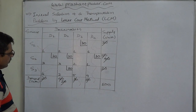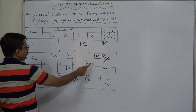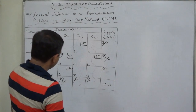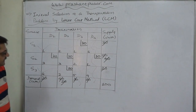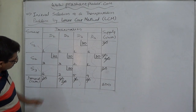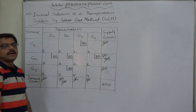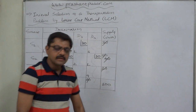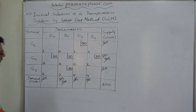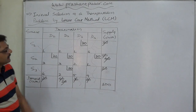Let us count the number of cells with allocation: 1, 2, 3, 4, 5. The m+n−1 rule states that allocations should be made in 6 cells (3 + 4 − 1 = 6), but allocation is only possible in 5 cells at this stage. Therefore this is not a physically feasible solution — it is an initial solution that is not feasible. Just for curiosity, let us calculate the total cost.